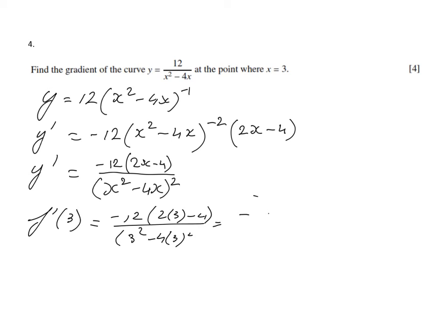We don't want to make any small unnecessary mistakes. So minus 12, 6 minus 4 is 2. So write down all the workings. And I should put another bracket there. What is that going to be? It's going to be 9 minus 12, which is minus 3. But because of the square, it's going to be 9.